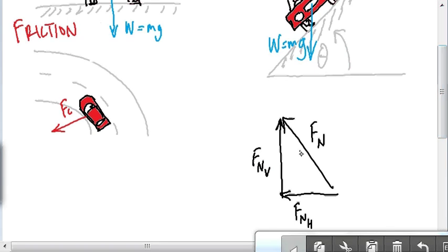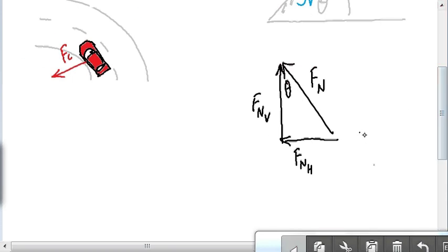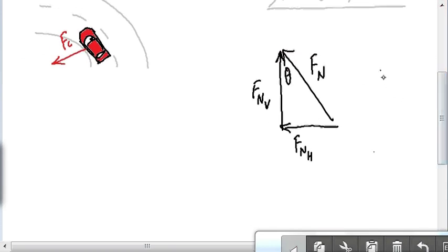In terms of where is theta in this triangle, it's up here. Again, if you want to prove that mathematically, you can talk to me another time about it, but it's enough for you just to know that that's theta up in that corner. It's got to do with the way that the normal force is 90 degrees and this theta is down here. Those of you who have done the special, probably prove that if you wanted to.